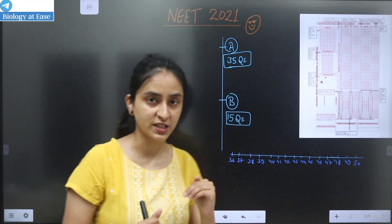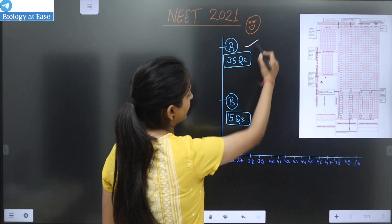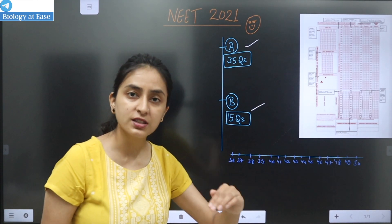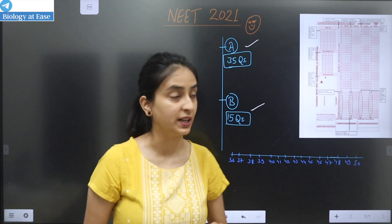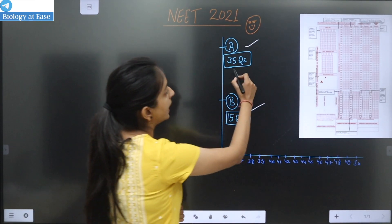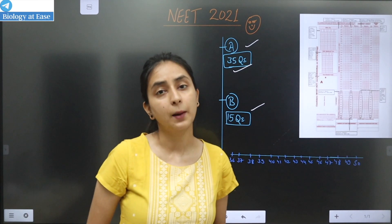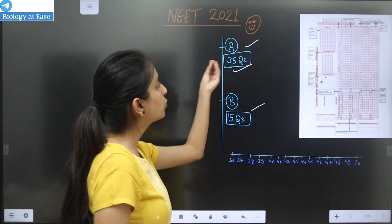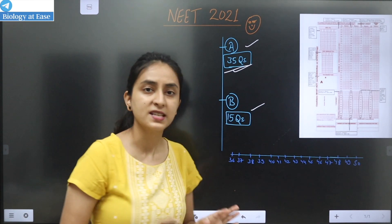You will get 2 sections in each subject: Physics Section A and Section B, Chemistry Section A and Section B. Similarly, Botany and Zoology also have Section A and Section B. In every subject, Section A has 35 questions, and you can attempt all 35.